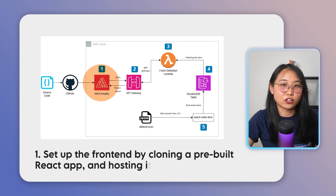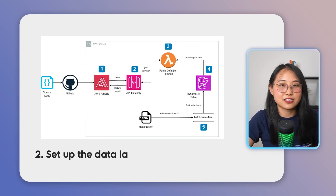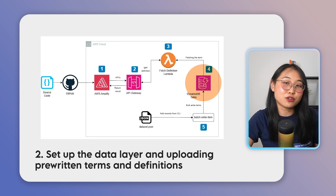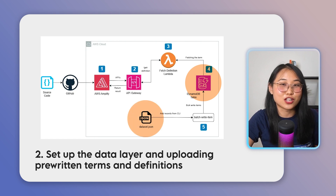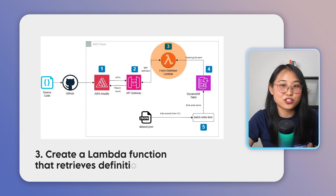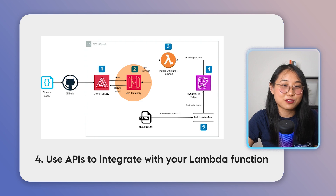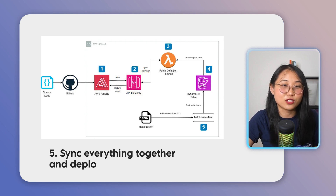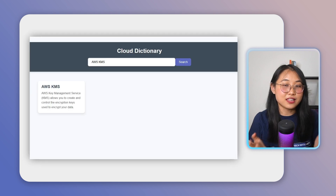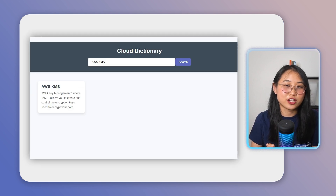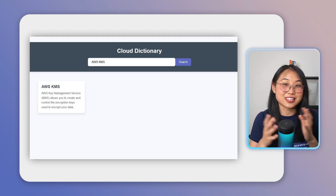First, set up the front-end by cloning a pre-built React app and hosting it onto AWS Amplify. Next, set up the data layer by creating a DynamoDB table and uploading pre-written terms and definitions using the AWS CLI. After that, create a Lambda function that retrieves definitions from DynamoDB when a user searches for a term. Then, use API Gateway to integrate with your Lambda function to make sure the search term gets passed through. And finally, sync everything together and deploy your application. By the end, you'll have a fully functional dictionary that's hosted entirely on AWS.